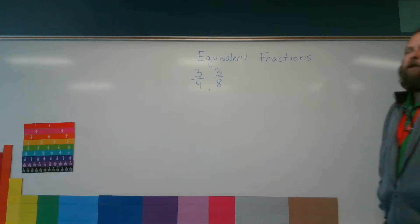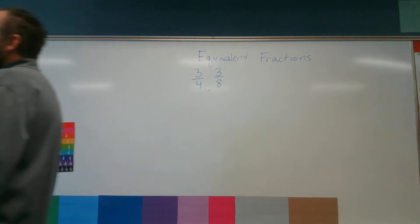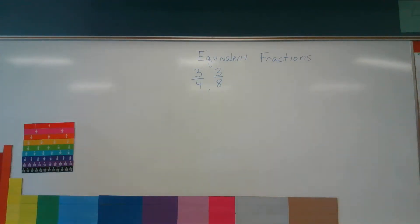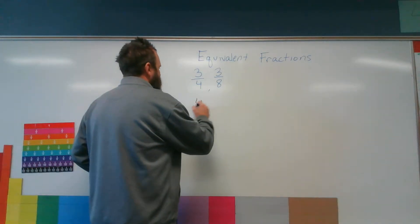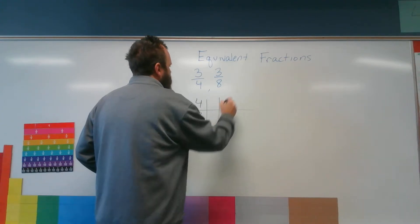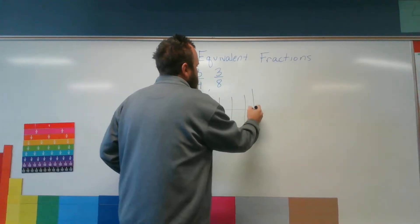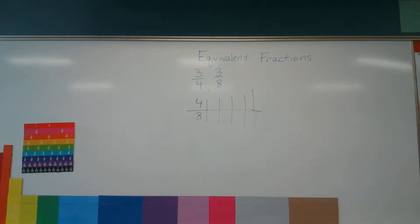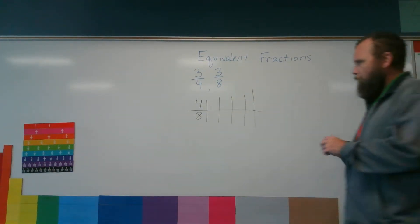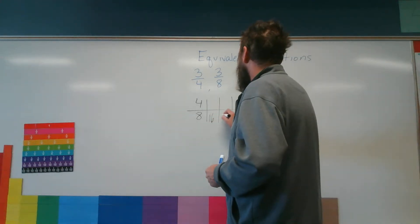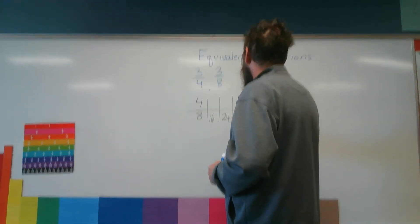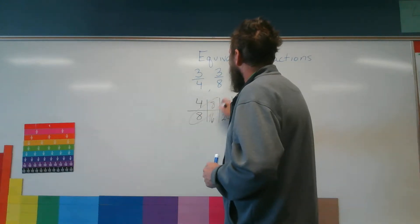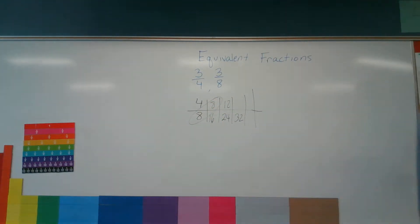The notes you have in your journal: the first thing it tells us to do is take our denominators, which are four and eight, and list the multiples until we find the first multiple they have in common. So if we go 8, 16, 24, 32... then 4, 8, 12 — oh look, they have 8 in common. 8 is our least common denominator.